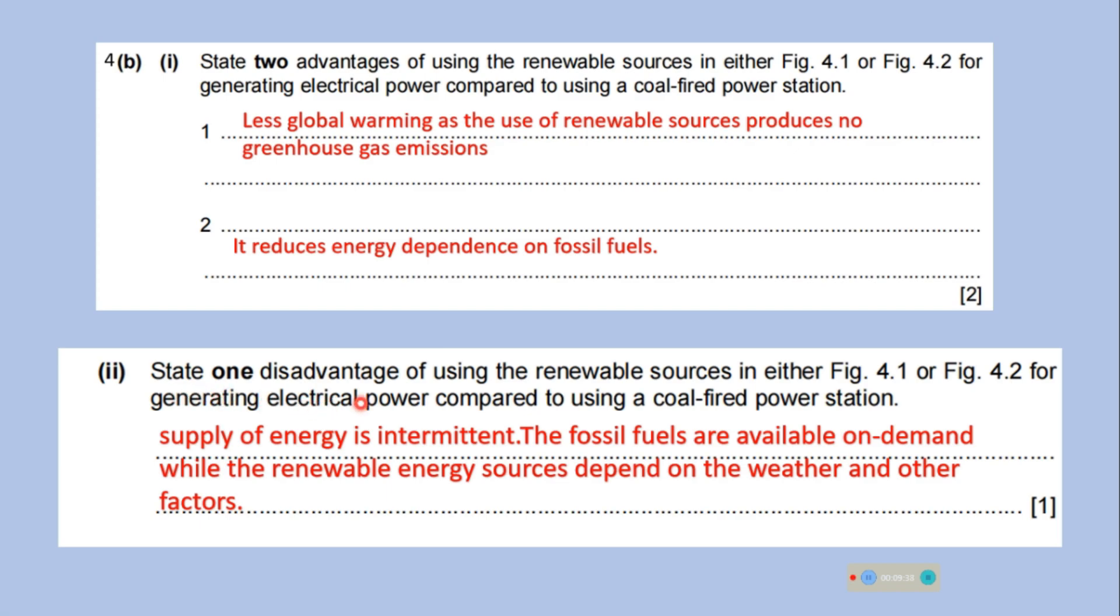State one disadvantage of using the renewable source in either figure part 1 or figure part 2 for generating electrical power compared to using the coal fired power station. So, supply of energy is intermittent. The fossil fuels are available on demand while the renewable energy sources depend on the weather and other factors.